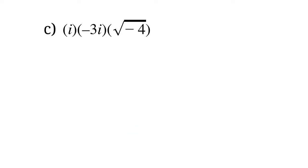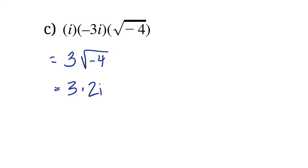Continuing on: i times negative 3i times the square root of negative 4. i times negative 3i — remember, i times i is just negative 1 — so it's like saying negative 1 times negative 3, which gives us 3, times the square root of negative 4. The square root of negative 4 is the square root of 4 with an i beside it, so it's 2i. So we just end up with 6i — an imaginary number for that answer.